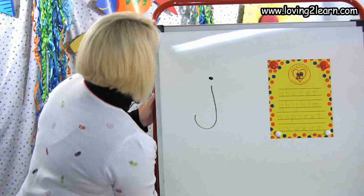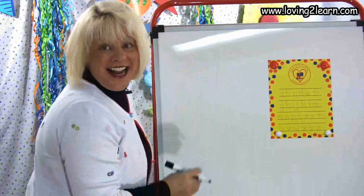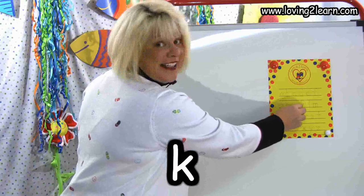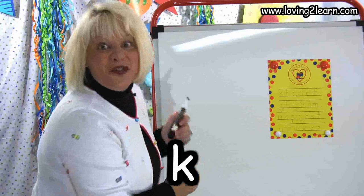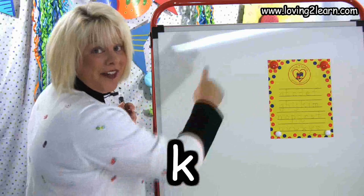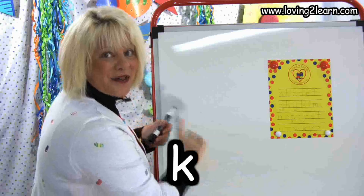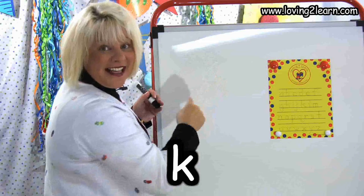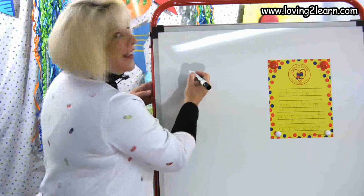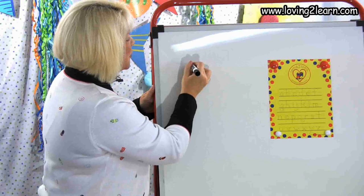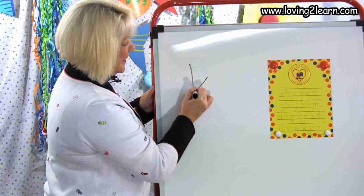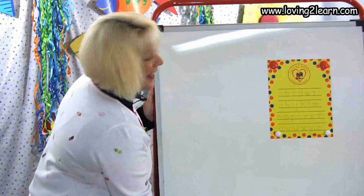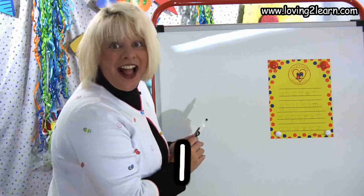The next letter is the letter K. We go straight line down, slanted line in, slanted line out. Do it with me in the air: straight line down, slanted line in, slanted line out. Now let's do it on the wipe-off board: straight line down, slanted line in, slanted line out. There's the small letter K.